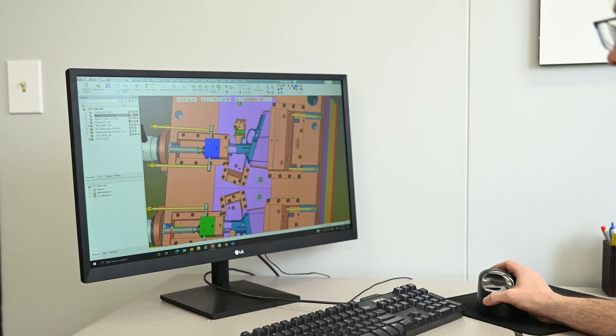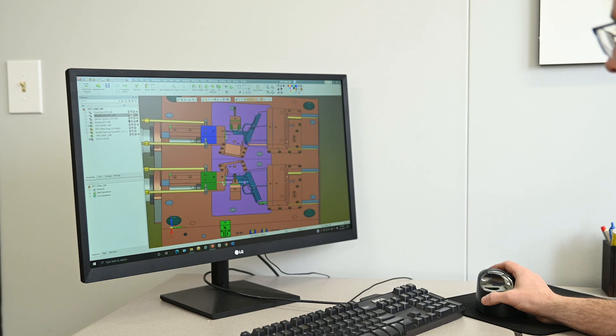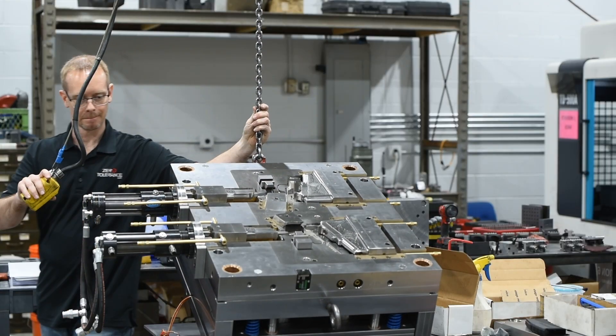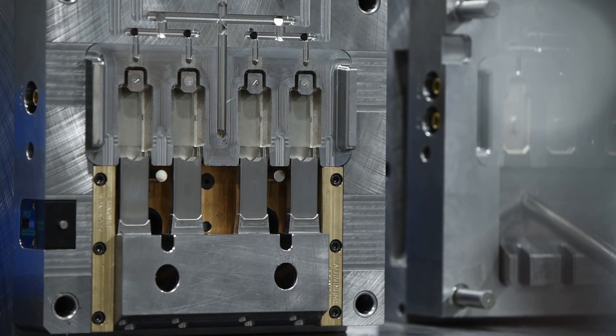Some of the interesting parts about building molds is the intricacy of how they work. When you think of a mold, most people see two halves come together and the part comes out. Well internally, when you have undercuts or features that can't be pulled out in a certain direction, there's a lot of mechanics and engineering that goes into that design and we do that here.